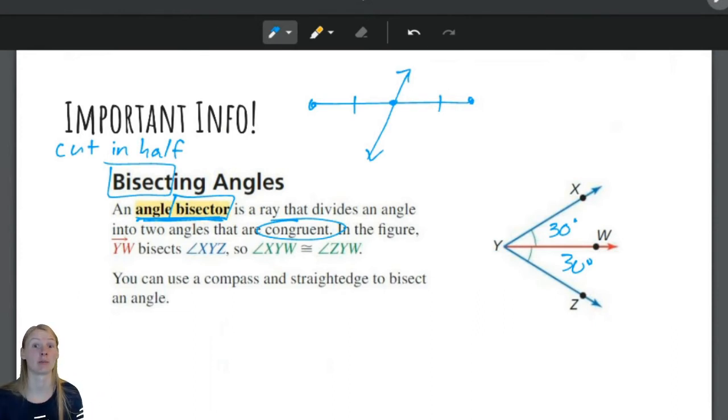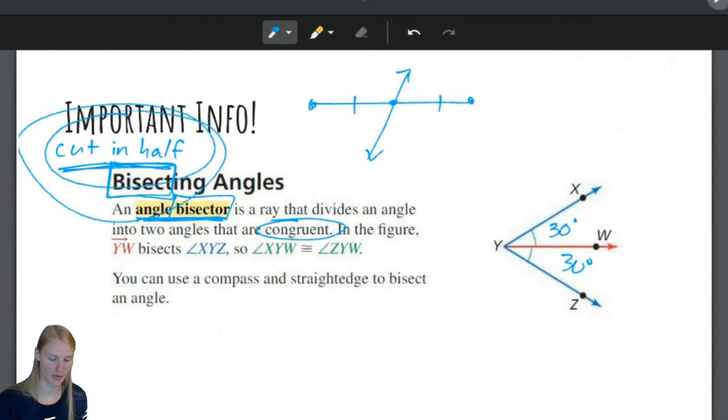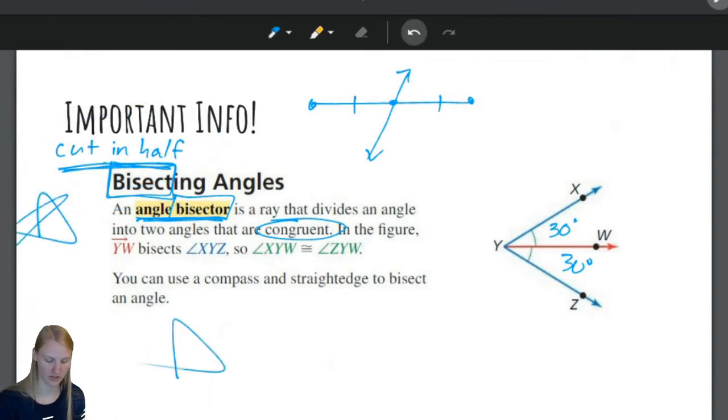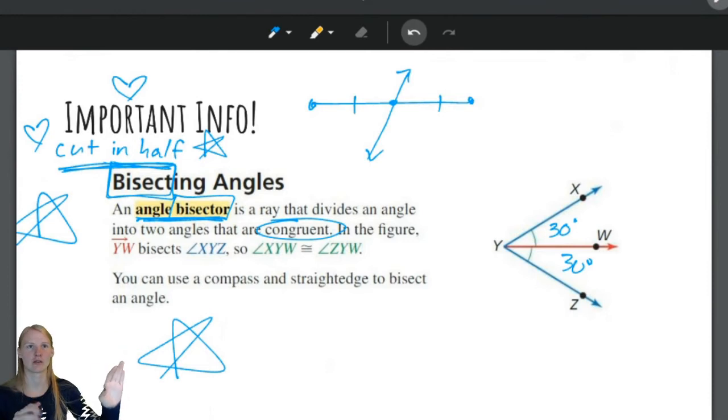Because this red ray right here is a bisector, it means that whatever this top angle is, the bottom angle will also be. Because a bisector cuts things perfectly in half. We are going to keep talking about bisectors for a long time, for the rest of the year. So, please, please, please remember that a bisector cuts things in half. This is super important. This is very important. Put stars around it in your notes. Save it in your brain. Bisect means to cut in half. Hearts and stars around it. It's important.